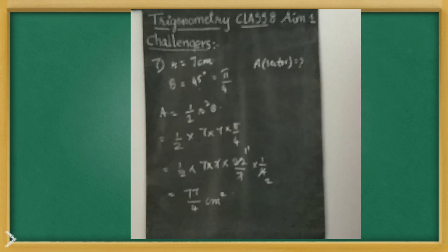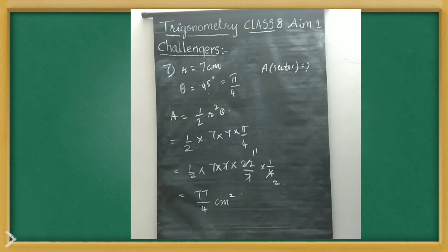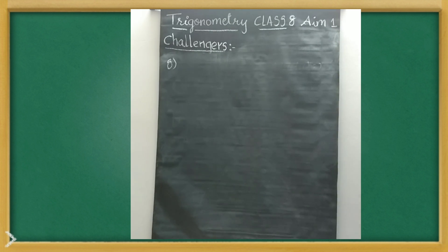This was the 7th one. Now we will see the 8th one. The 8th question is: the difference of two acute angles of a right angle triangle is 2π/5 radians. Then we have to find the angles in degrees.